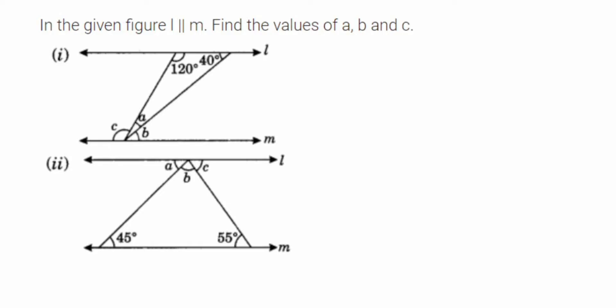Hey everyone, here's a question from lines and angles. We're going to solve this using properties of lines and angles. In the given figure, l is parallel to m. These are the lines l and m — they're parallel. Find the value of a, b, and c. In the first figure, two angles are given: 120 degrees and 40 degrees.